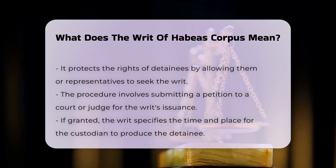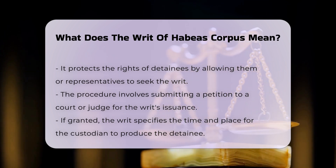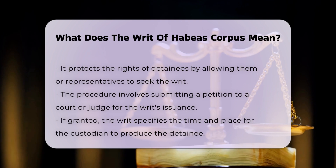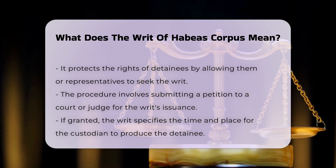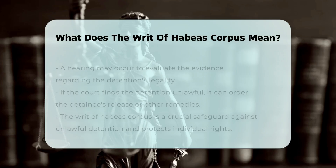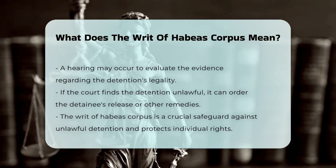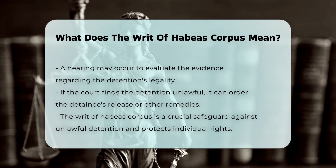The procedure for issuing a writ of habeas corpus involves presenting a petition to a court or judge, who then decides whether to issue the writ. If issued, the writ commands the custodian to produce the detainee at a specified time and place and to show cause for the detention.